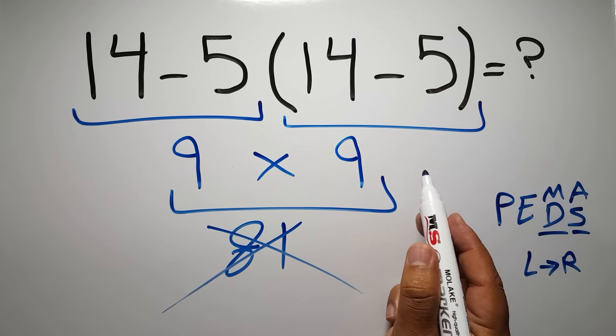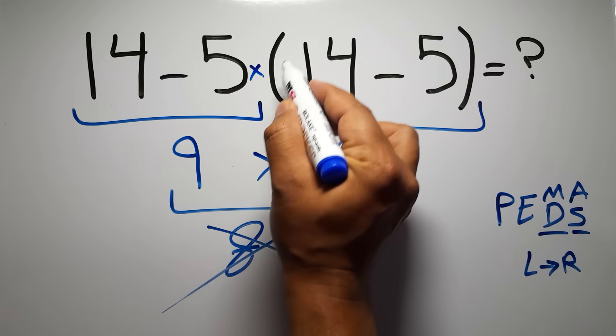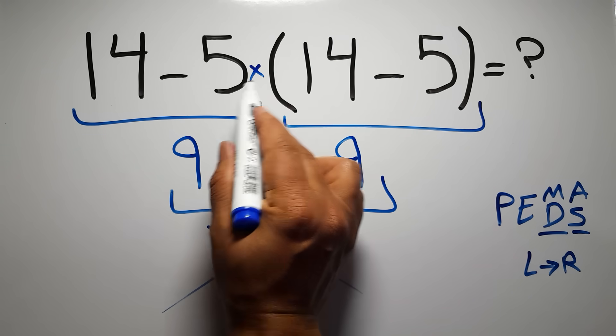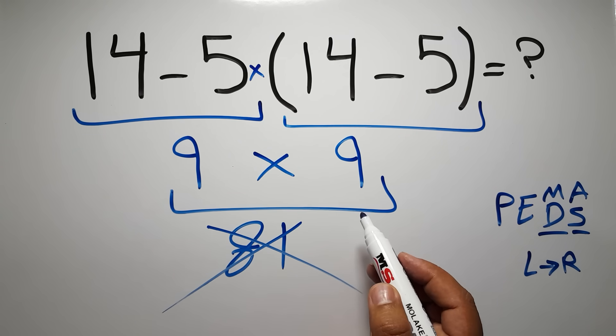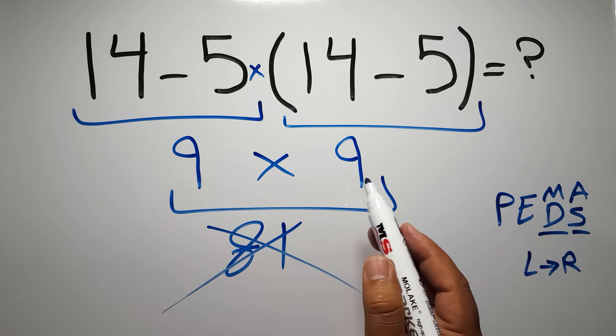In here we have one subtraction, one multiplication, and one parentheses. Inside these parentheses we have one subtraction. Here we have a multiplication because in mathematics when a number is placed next to parentheses it means multiplication, and we usually don't write the multiplication sign for brevity.